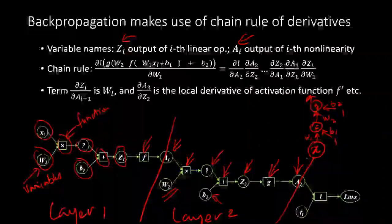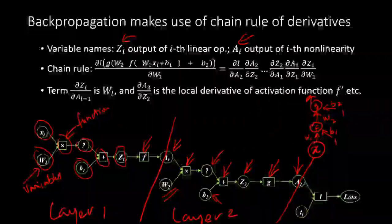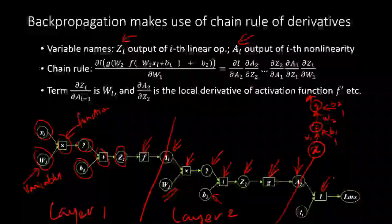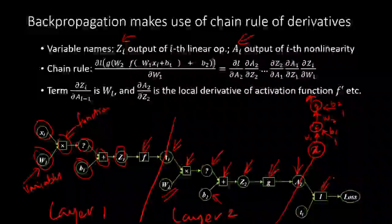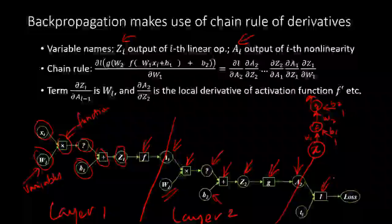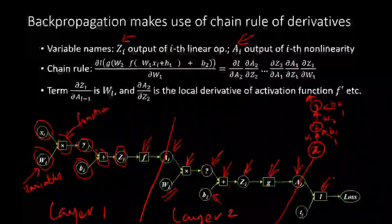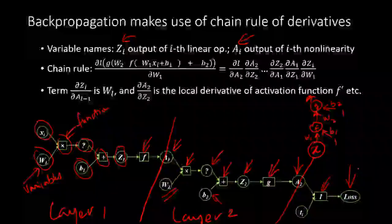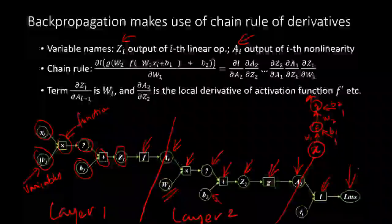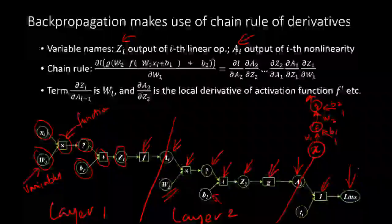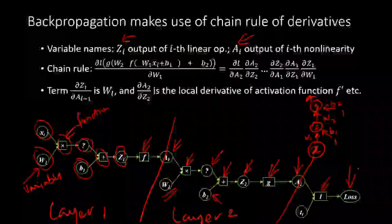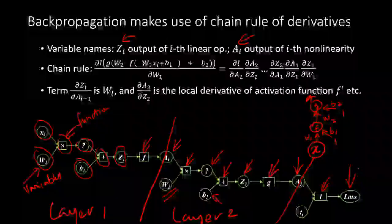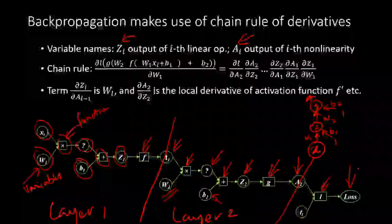Now we want to train the neural network, which means finding the minimum of the loss by changing W1, W2, B1, and B2. We want to compute the derivative of the loss with respect to all four unknowns. The most complex case is computing the derivative with respect to W1, and that is where we use chain rule. The chain goes backwards from the output: partial derivative of loss with respect to A2, times partial of A2 with respect to Z2, times partial of Z2 with respect to A1, times partial of A1 with respect to Z1, times partial of Z1 with respect to W1.